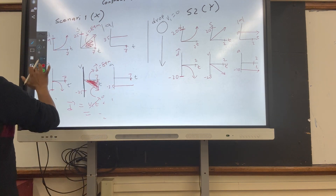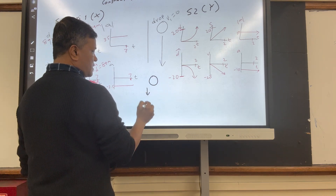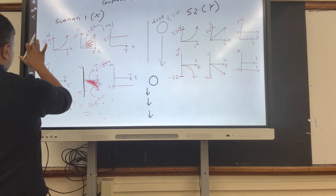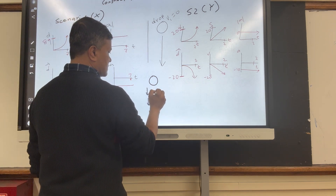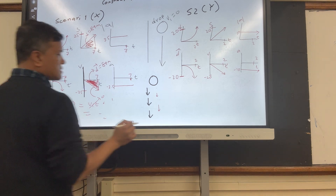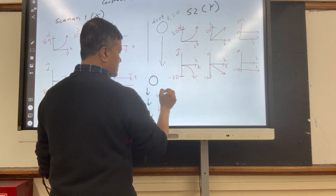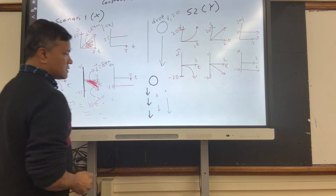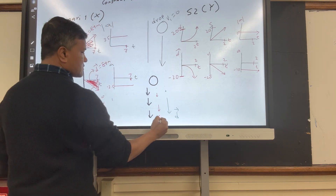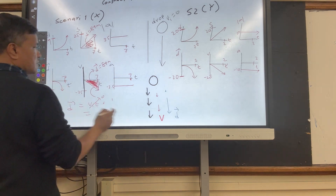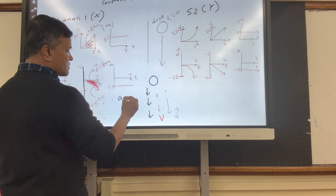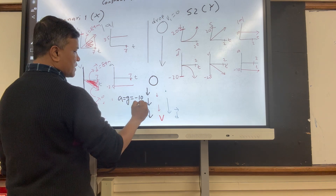When an object falls, there are three vectors. The name of the first vector is displacement. The name of the second vector is velocity. The name of the third vector is acceleration. How can we justify that acceleration due to gravity — lowercase g — is negative 10 meters per second squared?